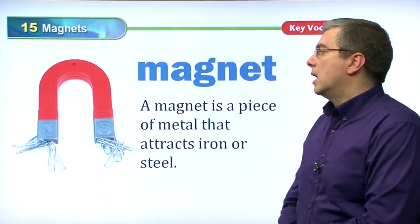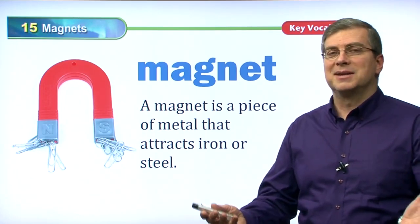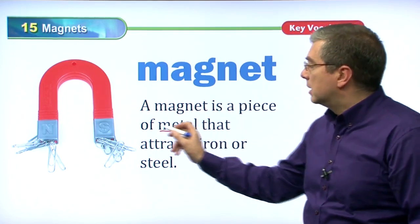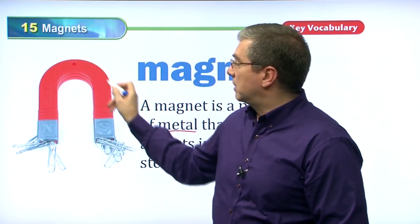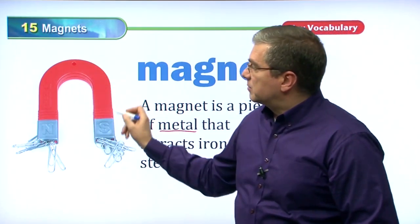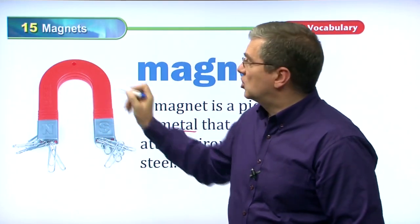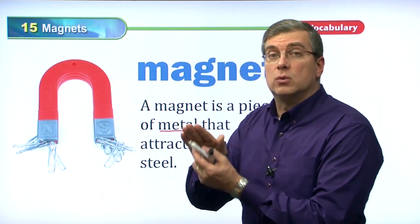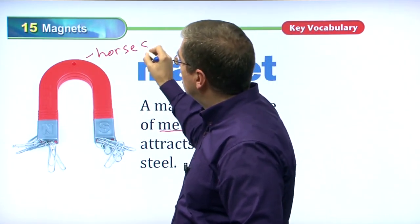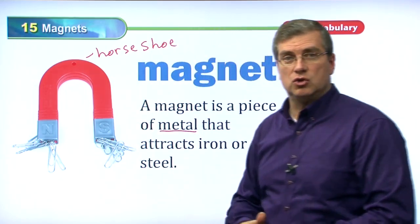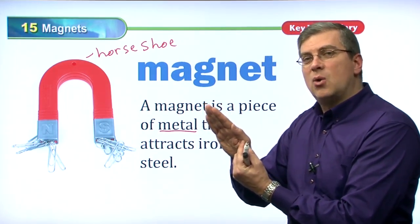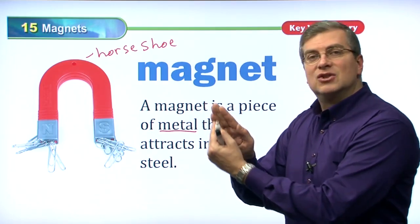Let's get on with the vocabulary. Our first word, of course, is magnet. A magnet is a piece of metal — like this piece of metal. Some magnets are shaped like a horseshoe — the shoe that a horse wears. So we call this a horseshoe shape, because a horse has a foot shaped like this.